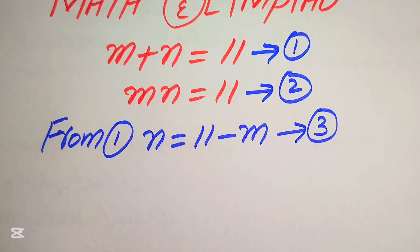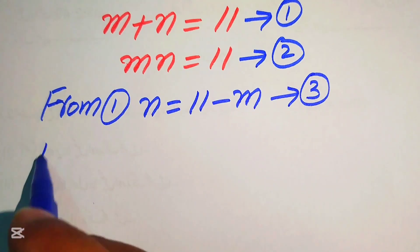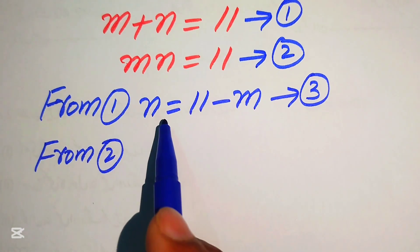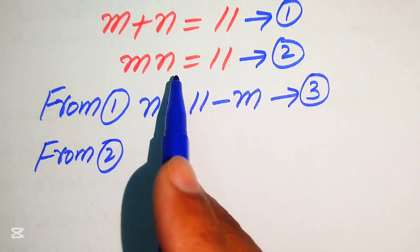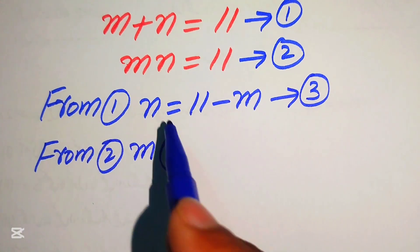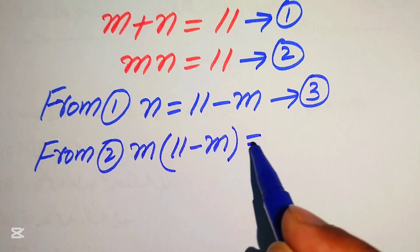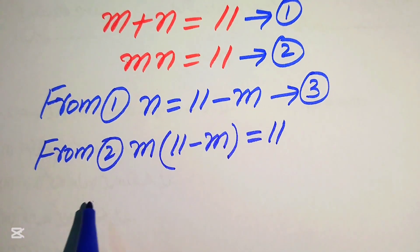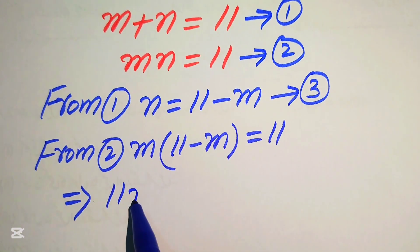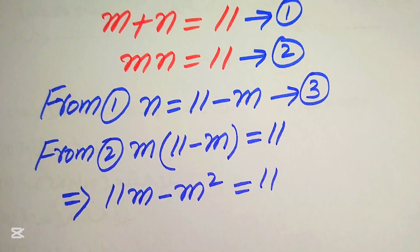Now we substitute this value of n into equation number 2. From equation number 2, we put the value of n, so we have m times (11 minus m) equals to 11. Multiplying m on both terms gives 11m minus m squared equals to 11.